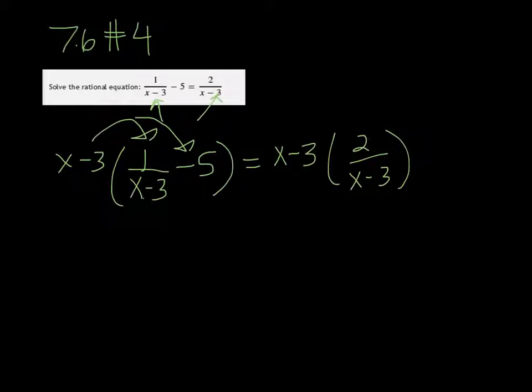the x minus 3 is divided out, and you just get 1. And then you have to multiply it by that 5, so minus 5 times x minus 3. And the x minus 3 is divided out here, and you just get 2.